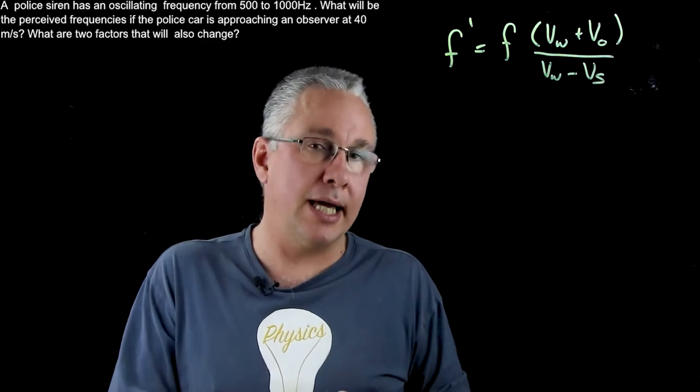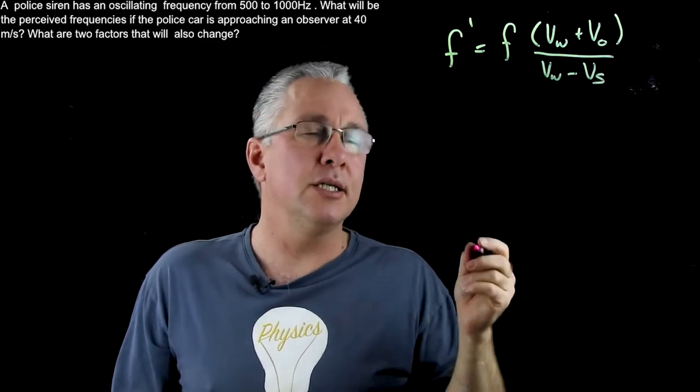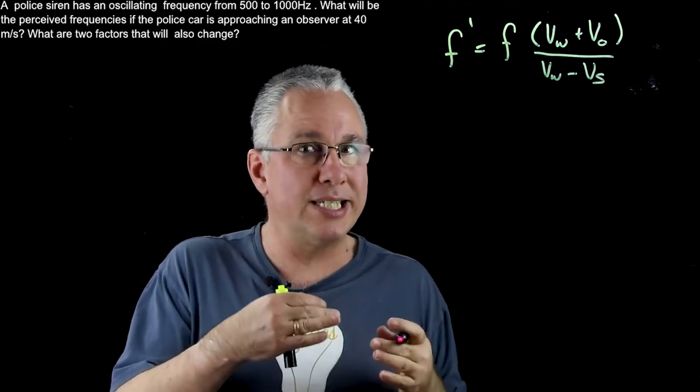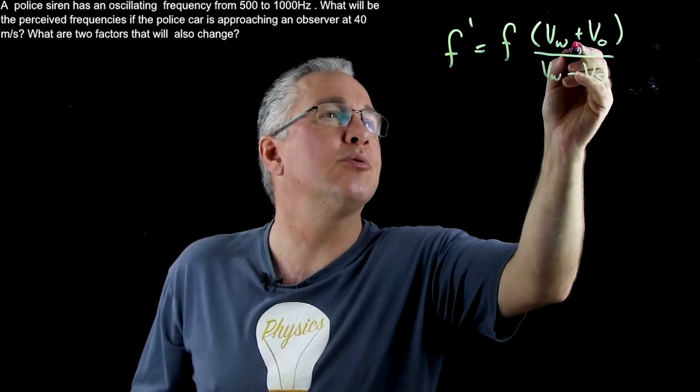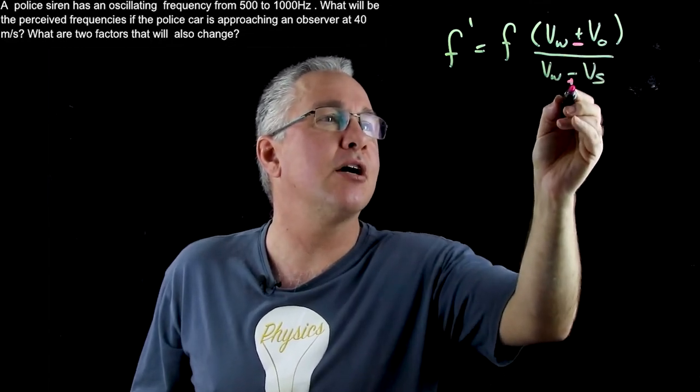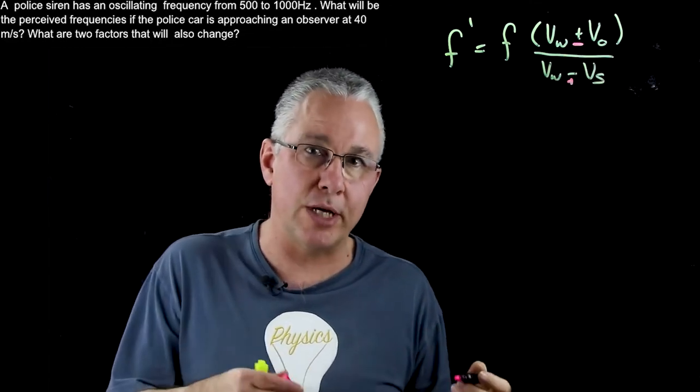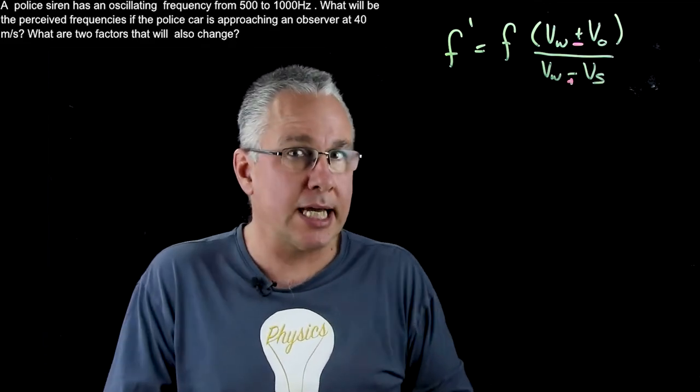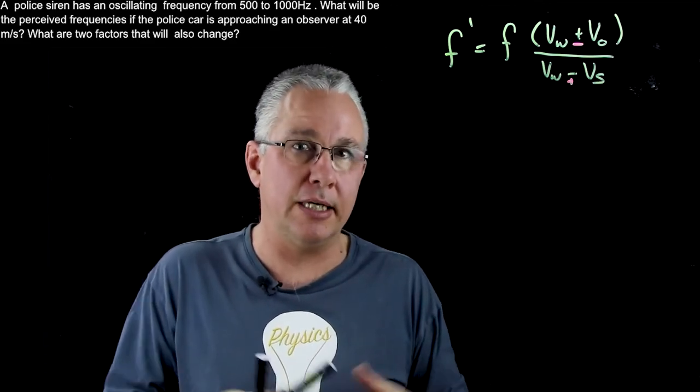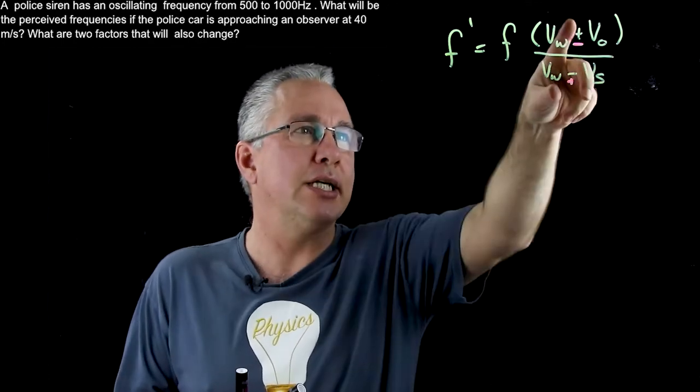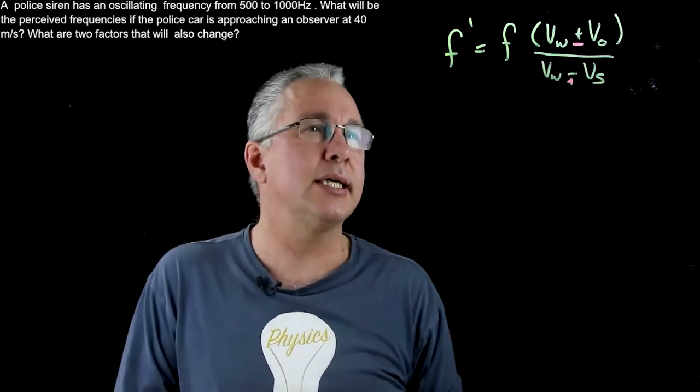Now strictly speaking, I can also modify this formula to suggest what happens if it's receding away. And so what we do is a minus over here and a plus over here. And that's referring to the situation where the object is moving away. In this case of course we're only interested in the approaching so we're just going to deal with the plus at the top and the minus down the bottom.